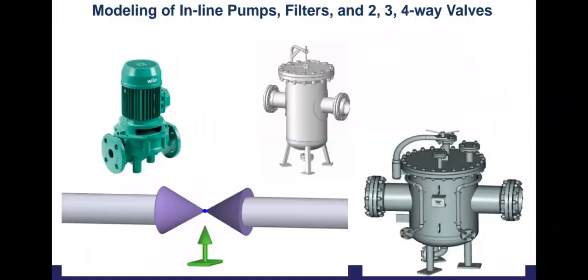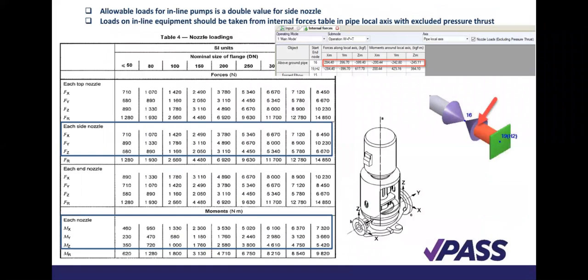Here we have modeling of in-line forms — the filter and the two, three, four valve wafers. This is how your in-line forms look like, your filter looks like, and the two, three, four valves and wafer valves. Same configuration here — if you watch carefully, you will see various properties and loading of your nozzle. This table also shows your nozzle loading.